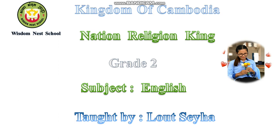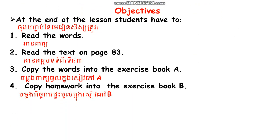Can you see the objectives? At the end of the lesson, students have to: one, read the words; two, read the text on page 83; three, copy the words into exercise book A; four, copy the homework into exercise book B. I have translated it for you already, so I hope all of you can read by yourself.